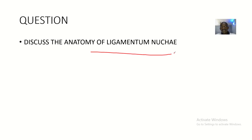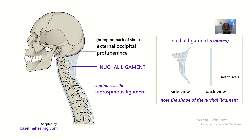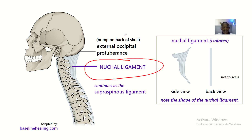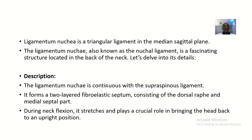We'll be talking about the ligamentum nuchae because it's unique. This is the ligamentum nuchae or nuchae ligament. It starts from the external occipital protuberance to the spinous process of the C7 vertebra. The ligamentum nuchae is a triangular ligament in the median sagittal plane, also known as the nuchae ligament — a fascinating structure located in the back of the neck.